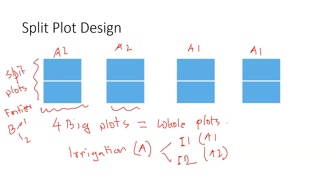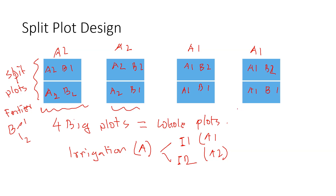Then I randomly assign the fertilizer to each split plot. So a whole plot with irrigation A2 gets one split with B2 and the other with B1. Similarly, a whole plot with A1 gets one split with B2 and the other with B1.